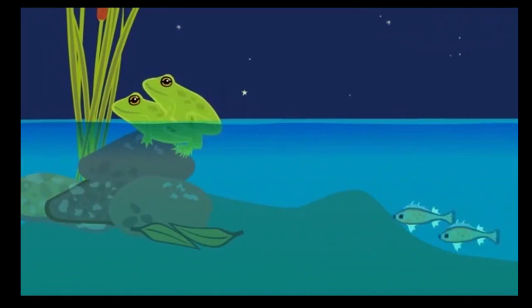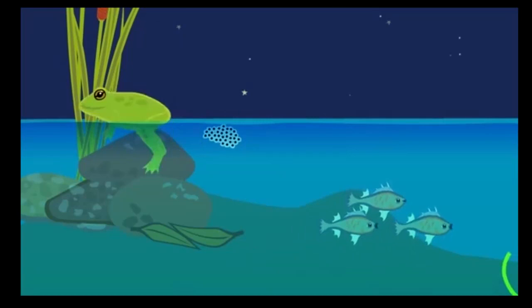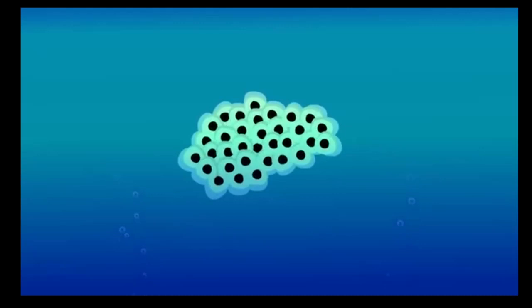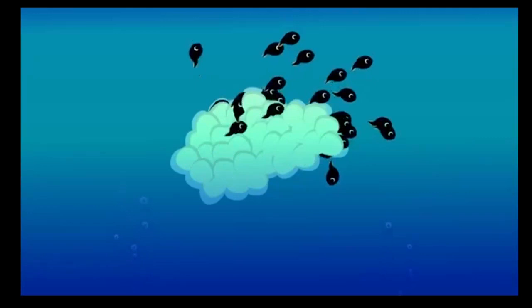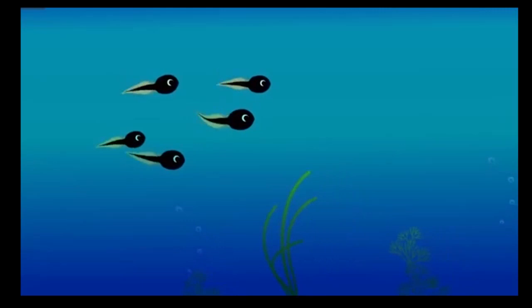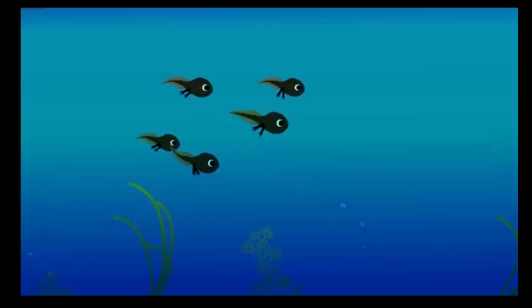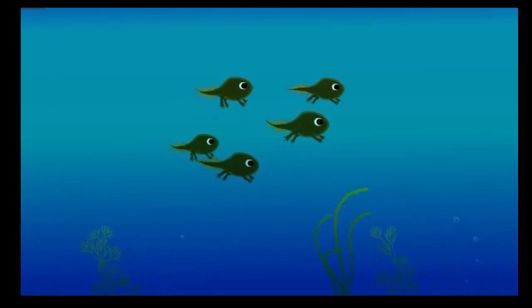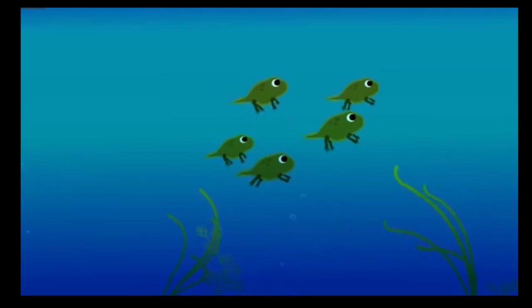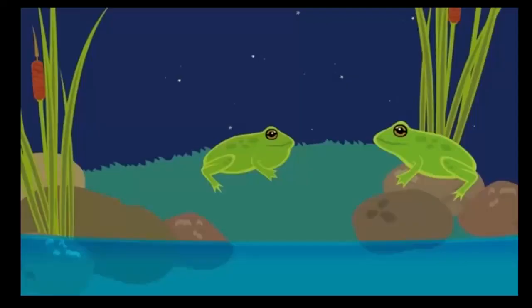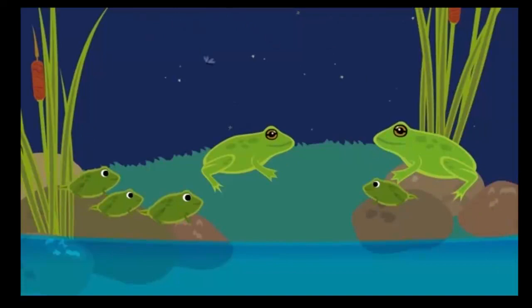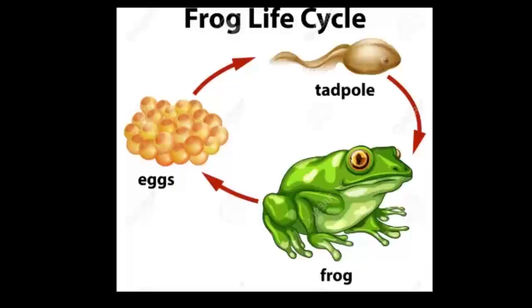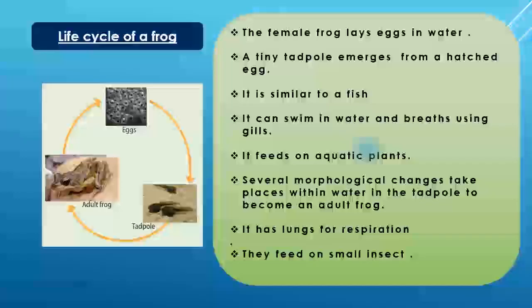The female frogs lay eggs in water. Then a tiny tadpole emerges from a hatched egg. This tadpole is similar to a fish — it can swim in water and breathe using gills. It feeds on aquatic plants.